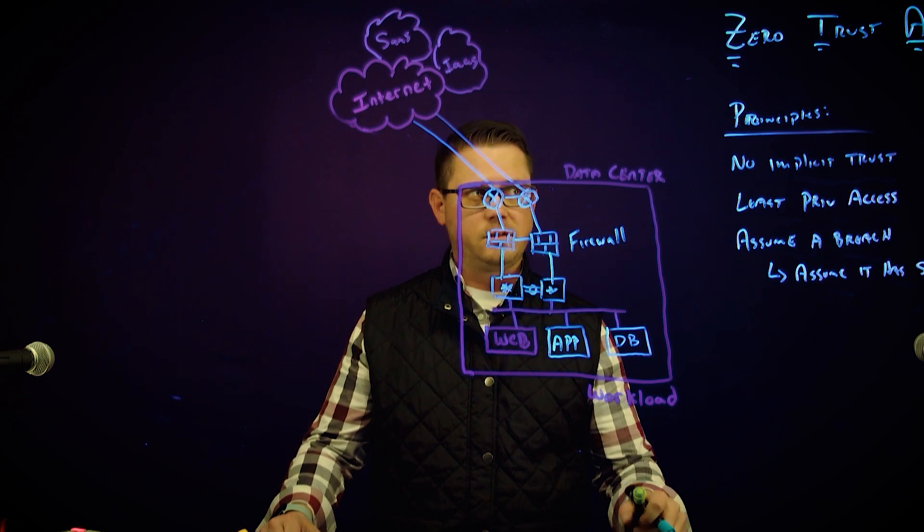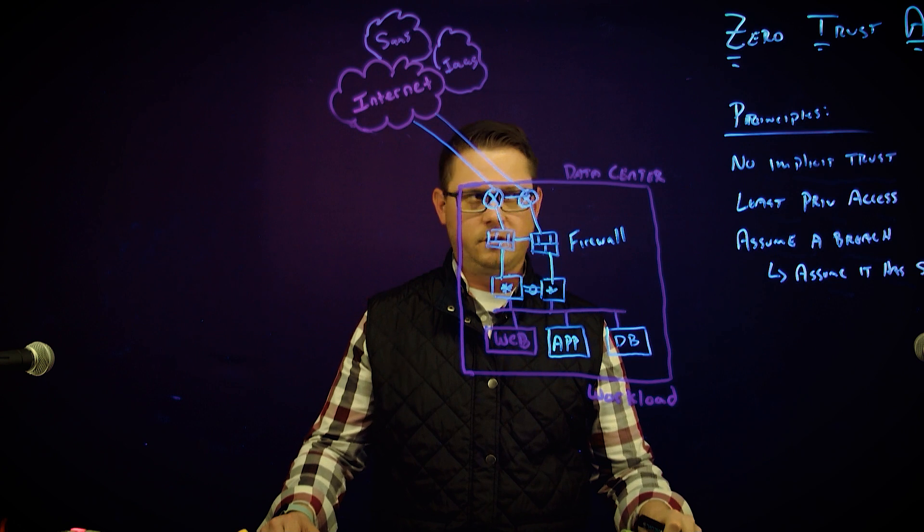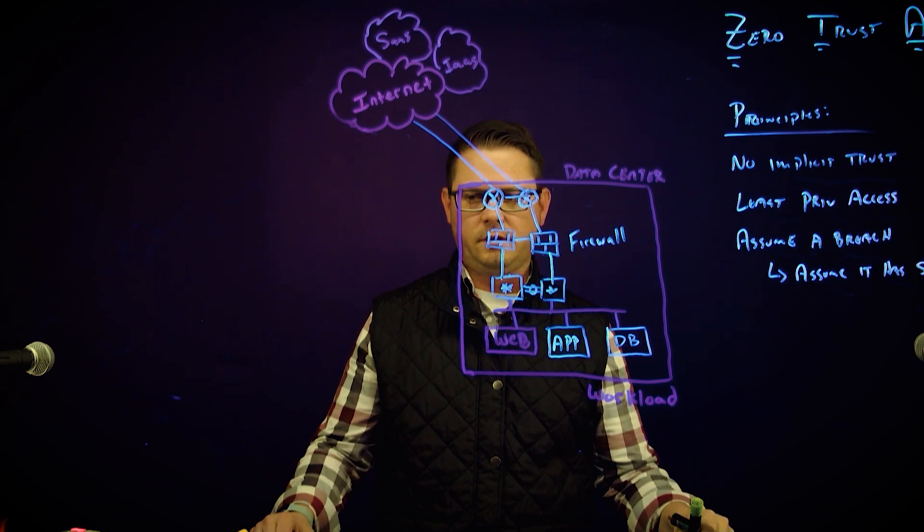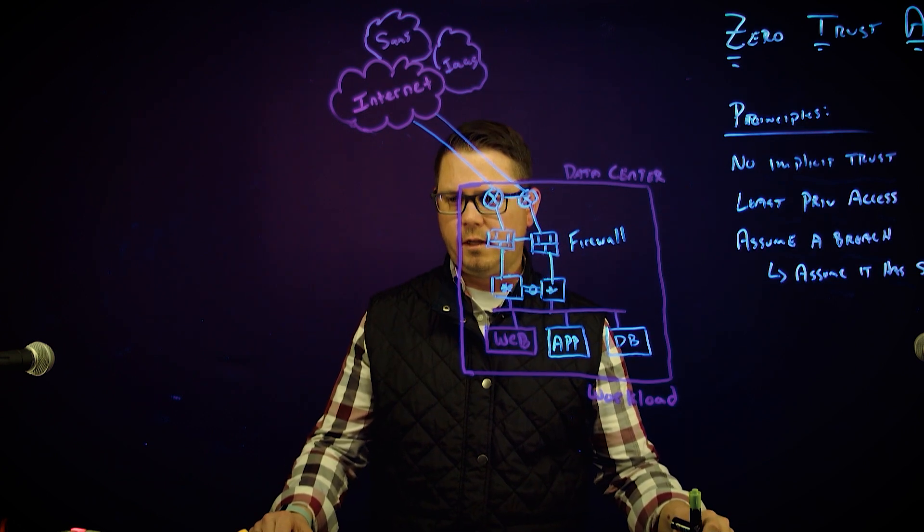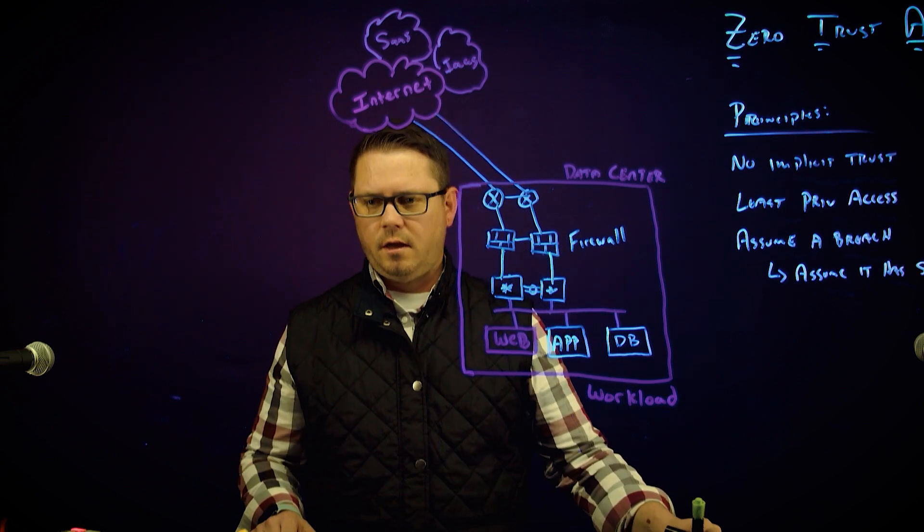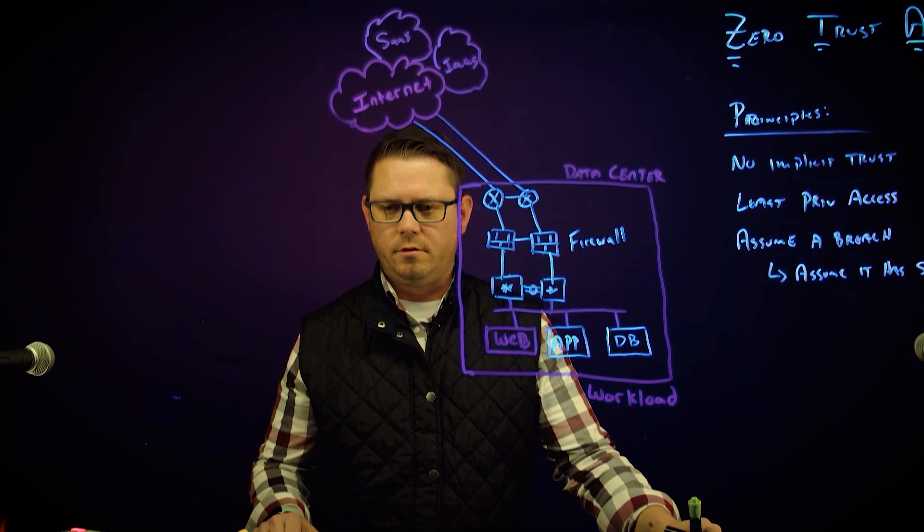Now, this is a very good start to align to some of our Zero Trust principles around no implicit trust and least privilege access. It can very quickly become difficult to manage and complex and hard to achieve scale.